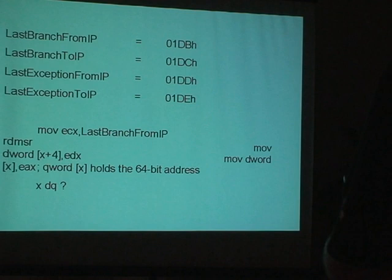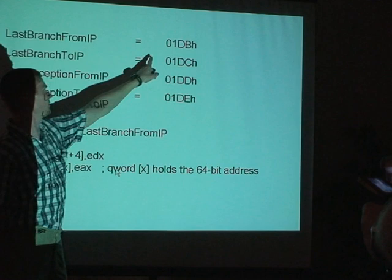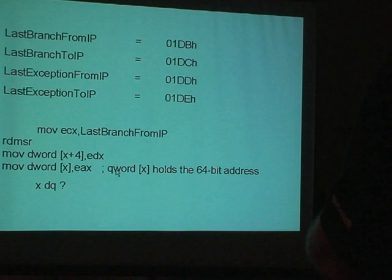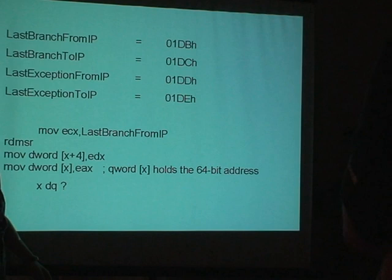Here is a sample of how to read the last branch — the Last Branch From IP register. We load ECX with the MSR address value, then execute read machine status register (RDMSR). The result: EDX holds the high double word of the address, and EAX holds the low double word, because the address is 46 bits wide.